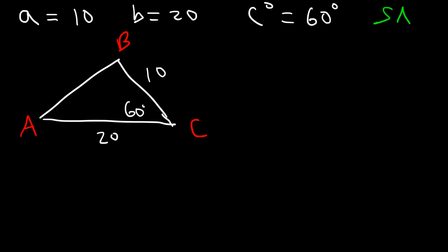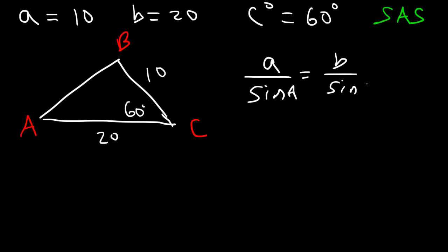Can we use the law of sines to solve the triangle? In order to use the law of sines you need to have two of the same letter. Notice that we can't use it — we have one of each different letter. For example, if we try to use A over sine A equals B over sine B, it's not going to work. We have A and B, but we don't have angle A nor do we know angle B.